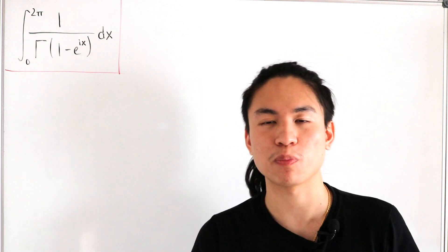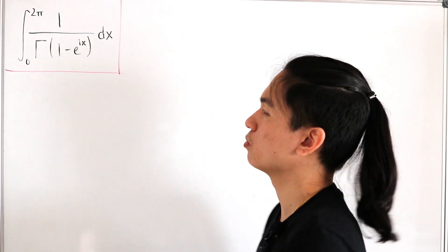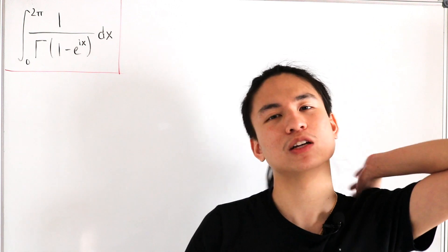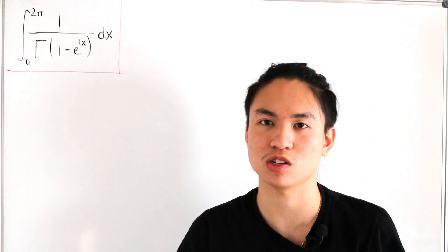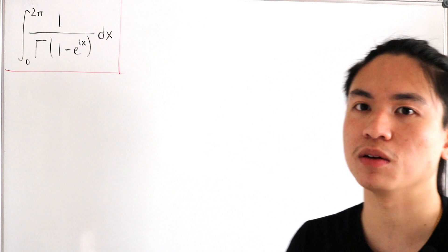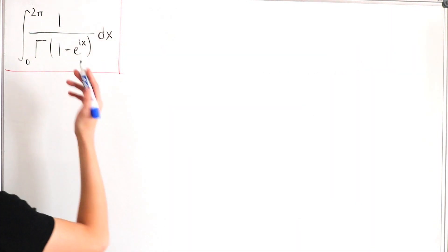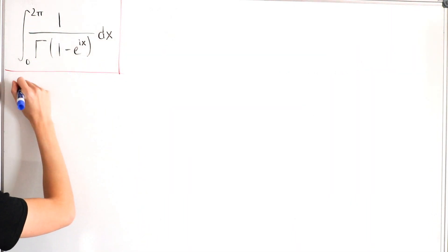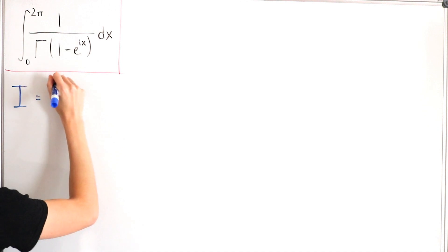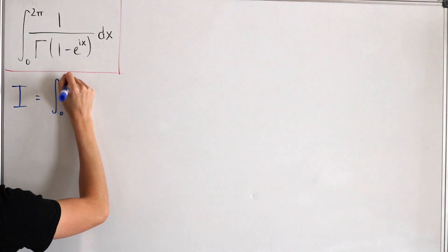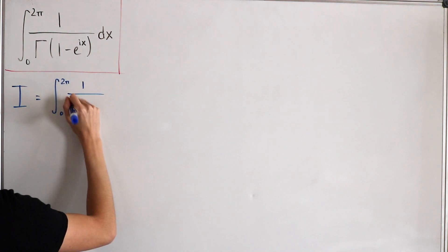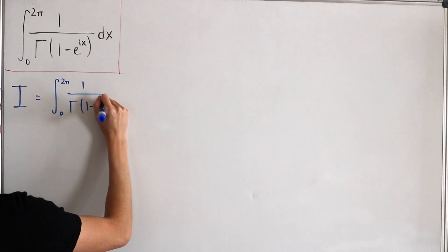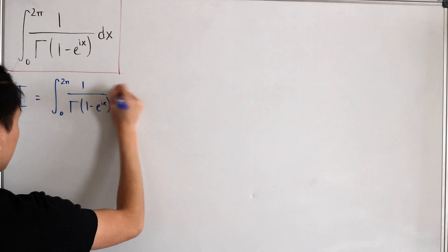It's actually a little simpler than you'd think when looking at it at first glance, so there's really no need to overthink this, so you'll see why. So anyway, let's actually just jump in. I'll call this given integral I. I'll just rewrite the same thing again: 0 to 2π of 1 divided by gamma of 1 minus e to the ix dx.